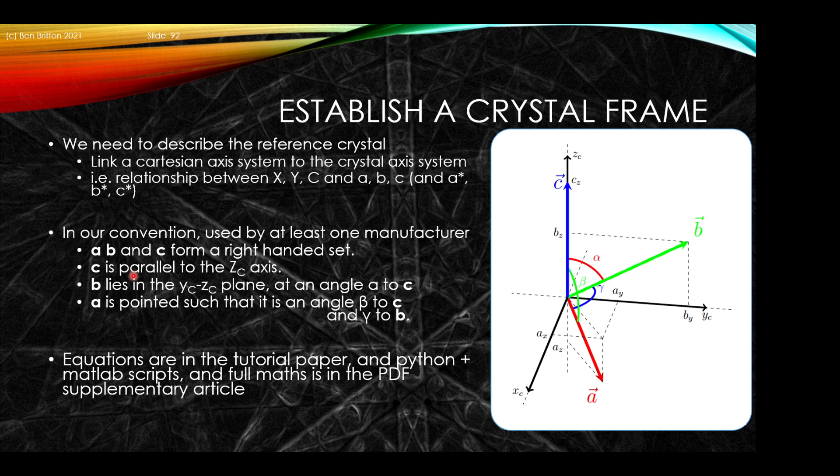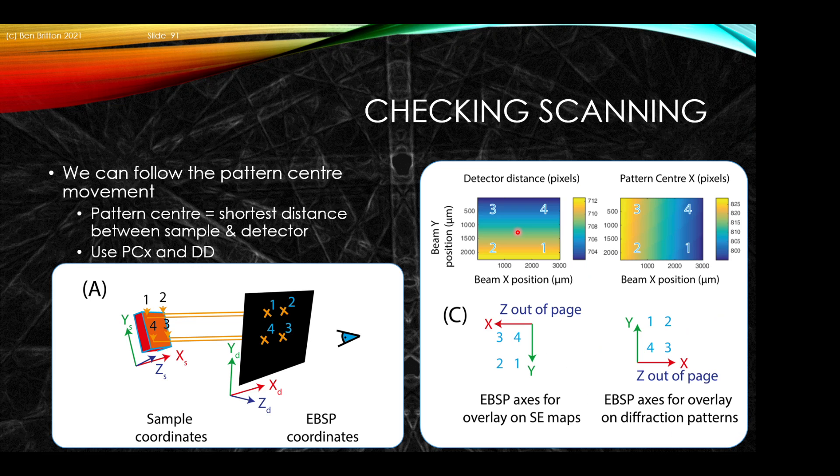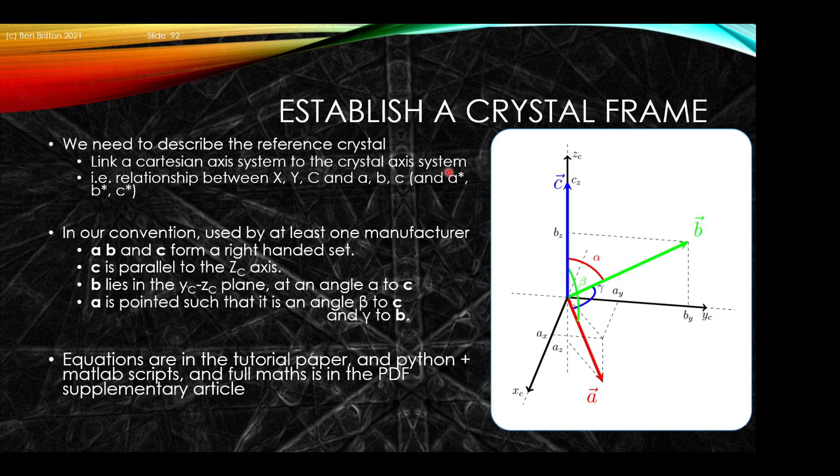Once you've done that, we need to think about how we establish the reference crystal. We want to link a Cartesian axis system to the crystal axis system, the relationship between X and Y to A, B, and C, and specifically also to the reciprocal lattice vectors A star, B star, and C star. In our convention, which is used at least by the Bruker system, we say that A, B, and C form a right handed set. We say that C is parallel to the Z_c axis. B lies in the Y_c, Z_c plane at an angle alpha to C. B is pointing at an angle beta to C and an angle gamma to B. So C is pointing along Z_c.